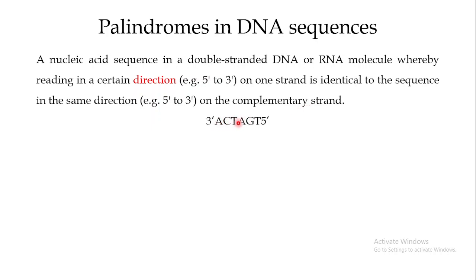For example, if this is one strand of the DNA and you are reading it from the five prime to the three prime end, you can see this is TGATCA. And if you look at the second strand and read it again from the five prime to the three prime direction, you can see that this is also TGATCA. So reading in a particular direction on both strands of the DNA gives you the identical sequence — these are known as palindromic sequences.